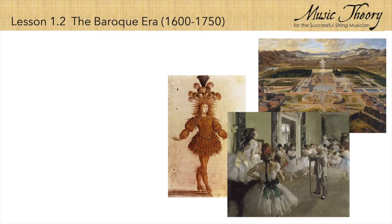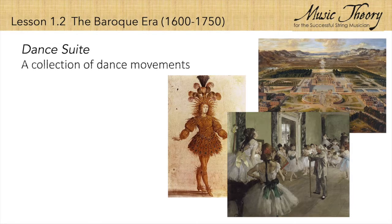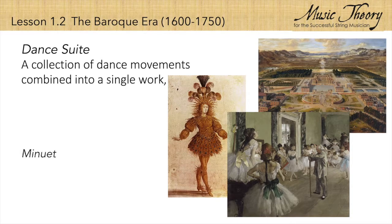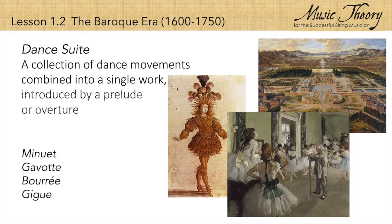To keep up with demand, composers wrote dance suites, which are multi-movement collections of dances with names like minuet, gavotte, bourrée, and gigue. Like plays and operas, ballets and dance suites are also introduced with a one-movement instrumental overture.